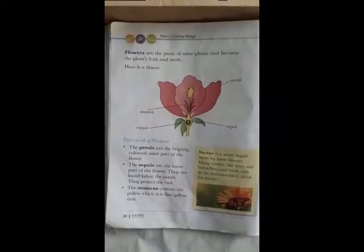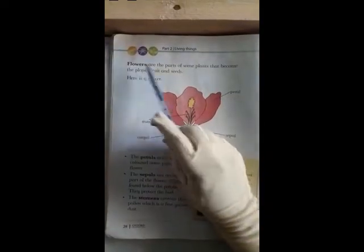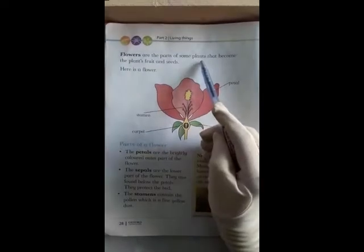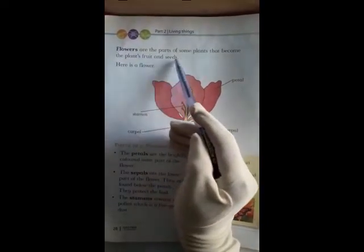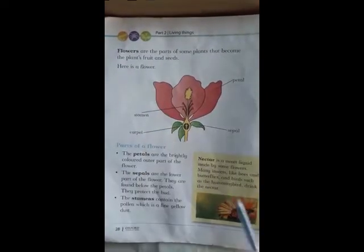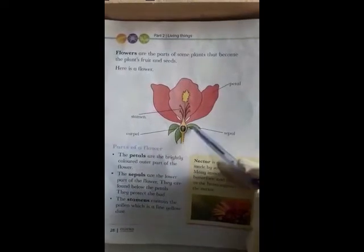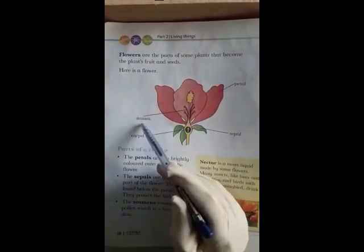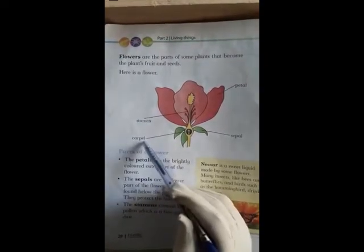Now open page number 28. Flowers are the parts of some plants that become the plant's fruit and seeds. Here is a flower. This is called a petal. And this is called a sepal. This is called a stamen. And this is called a carpel.